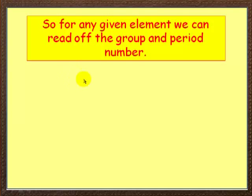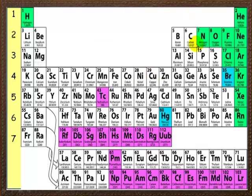So what we can do for any given element, we can read off the group and period number. Let's go back a second. So you can see here, say we chose sulfur for example, we could say what is its group and period.